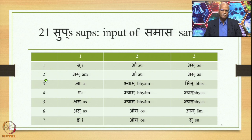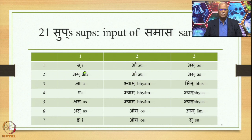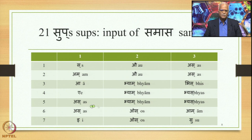The seven Vibhaktis are: Prathama (1), Dvitiya (2), Tritiya (3), Chaturthi (4), Panchami (5), Shasthi (6), and Saptami (7). So we have seven Vibhaktis and three numbers. Here are the sups in Paninian terms: Su-au-jas, am-au-as, a-bhyam-bhyas, a-bhyam-bhyas, as-bhyam-bhyas, as-os-am, and i-os-su. These are the 21 sup suffixes.